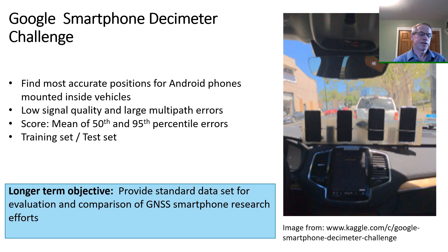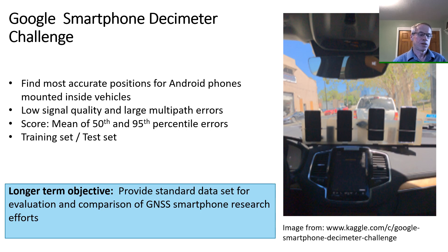Competitors were scored on how close they could match the ground truth based on an average of the 50th percentile errors and the 95th percentile errors. Because the phones were located inside the vehicles and because the phones have very low quality antennas, the raw data was significantly more challenging than what you would get from even low-cost receivers. The raw data was split between a training set for which the ground truths were provided and a test set for which they were not. The test set was further divided into a public set and a private set. Competitors could submit solutions and be scored on the public test set anytime during the competition, but scores for the private test set were withheld until the end to determine the winners. Beyond the competition itself, Google's longer-term objective was to create a standard data set for evaluation and comparison of GNSS smartphone research efforts.